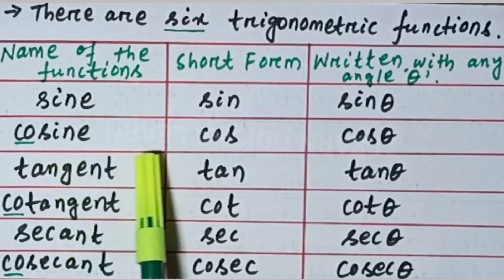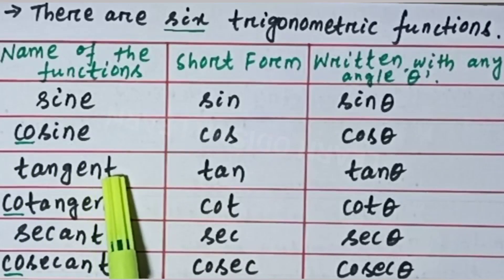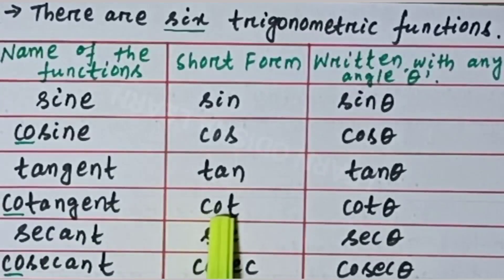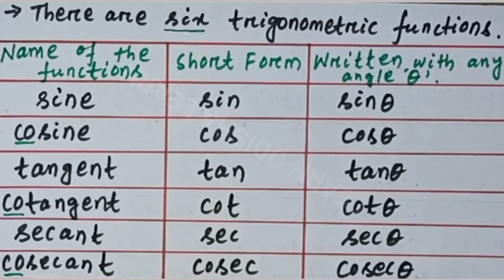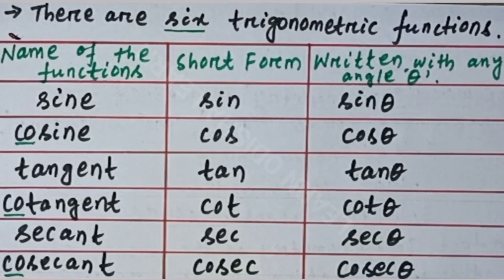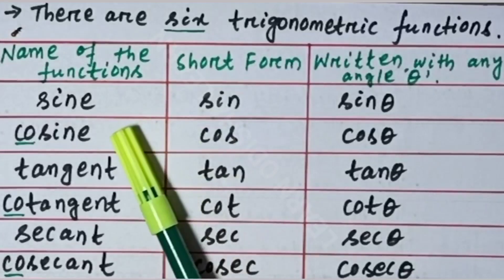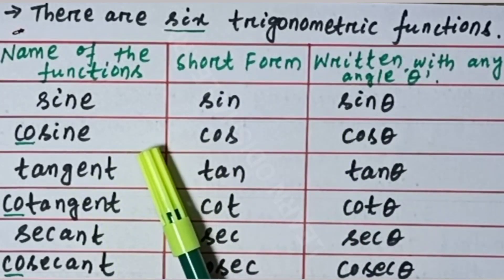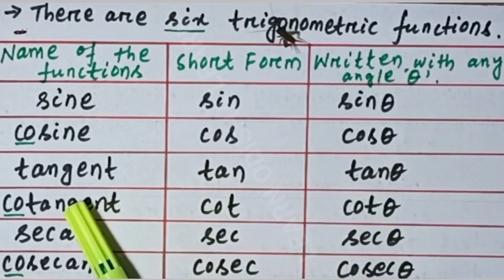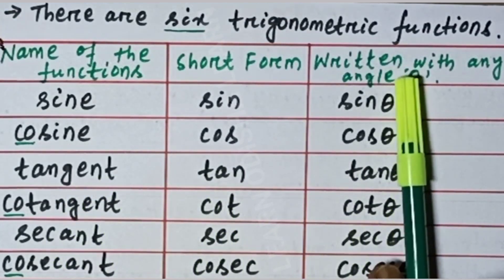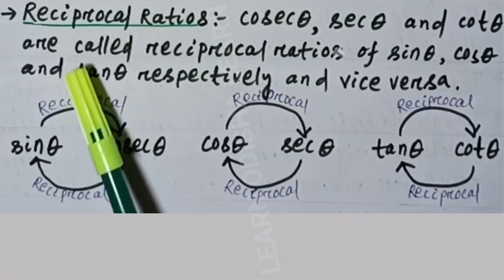The six trigonometric functions are: sine written as sin, cosine written as cos, tangent written as tan, cotangent written as cot, secant written as sec, and cosecant written as cosec. When written with angle theta, they become sin theta, cos theta, tan theta, cot theta, sec theta, and cosec theta.